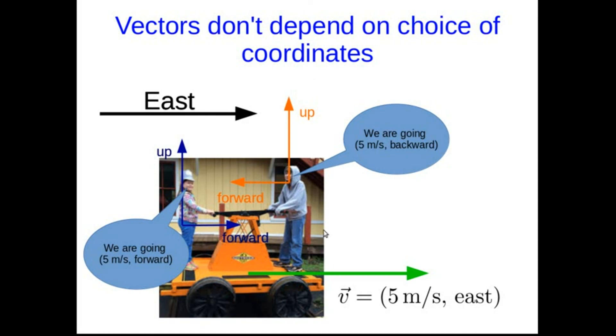So you disagree in how to write the vector down. But here's the thing. The vector itself doesn't depend on the coordinates. It is 5 meters per second east. If you and your friend both point in the direction of the vector, you're both going to point east. So you agree on the direction. You agree that it's 5 meters per second. But the way you express that is dependent on your choice of coordinates.